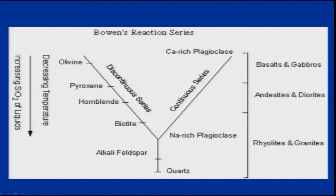This is again a comparison of the Bowen reaction series — different types of minerals formed in the continuous and discontinuous series — and with different compositions, different rocks are named here. We will talk in detail about what is basalt, gabbro, andesite, diorite, rhyolite, and granite, and how they are classified as extrusive or intrusive rocks.